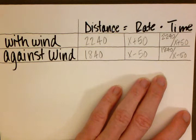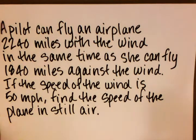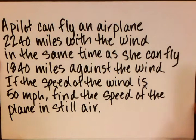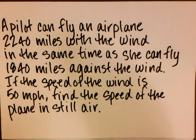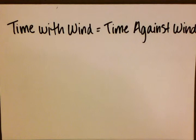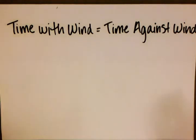Now let's go back to the problem again. Many times these questions get confusing and it's good to reread so we understand exactly what's being asked. We want to focus on the wording: the pilot can fly with the wind in the same time as she can fly against the wind. This is our key phrase for setting up the equation — time with the wind equals time against the wind.